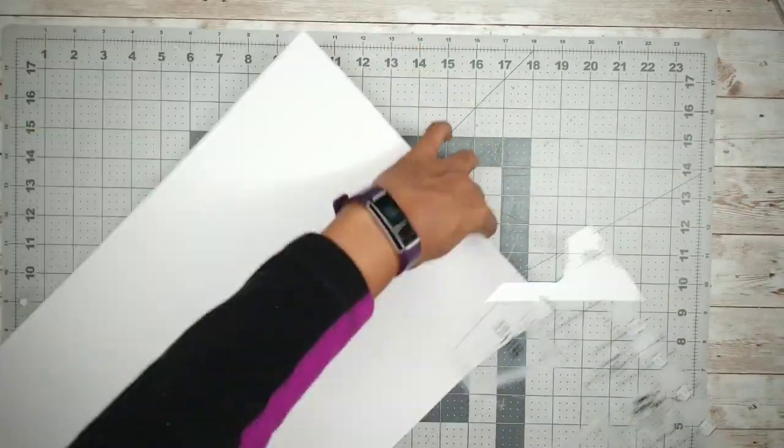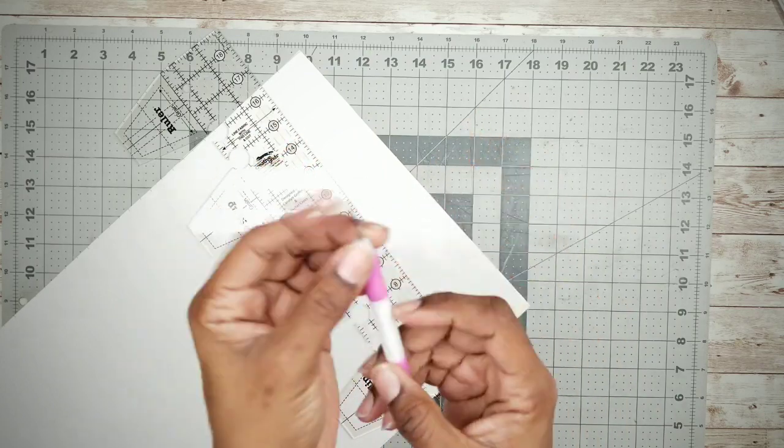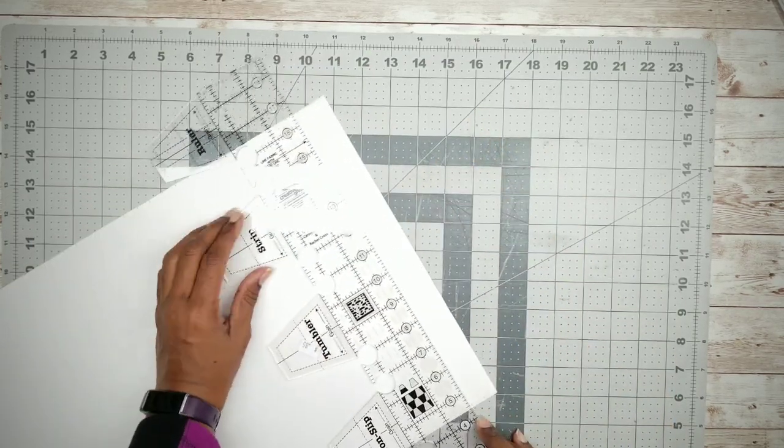And then I'm going to take an embossing tool, which is also available at the Dollar Tree, and I'm going to emboss lines making sure that I'm matching up those marks that we just made.